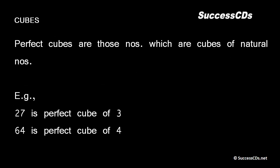Perfect Cubes. Now what are perfect cubes? Perfect cubes are those numbers which are cubes of natural numbers. For example, 27 is a perfect cube of number 3, and 64 is a perfect cube of number 4.